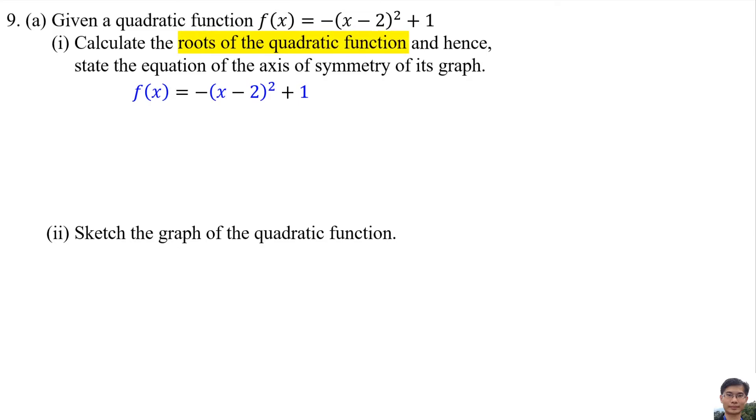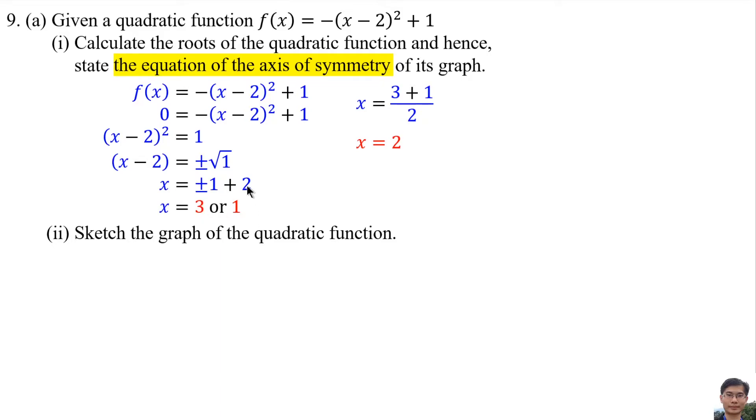Root of quadratic function f(x) equals negative x minus 2 squared plus 1. Let f(x) equals 0, then find the values of X. So x is 3 or 1. The equation of the axis of symmetry means x equals 3 plus 1 over 2, so x equals 2.